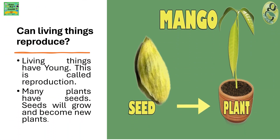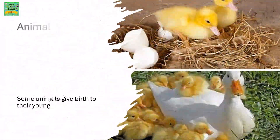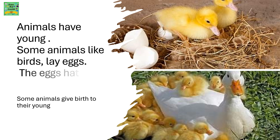Can living things reproduce? Living things have young — this is called reproduction. Many plants have seeds, and seeds will grow and become a new plant. Animals also have young. Some animals, like birds, lay eggs and the eggs hatch into young birds. Some animals give birth to their young ones.